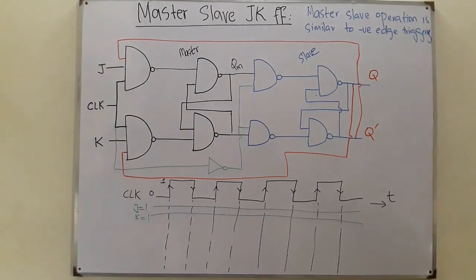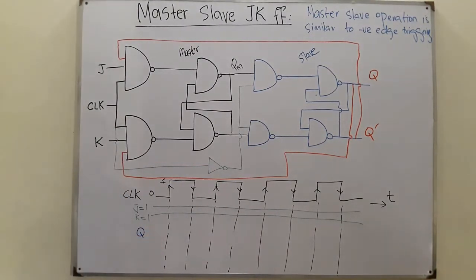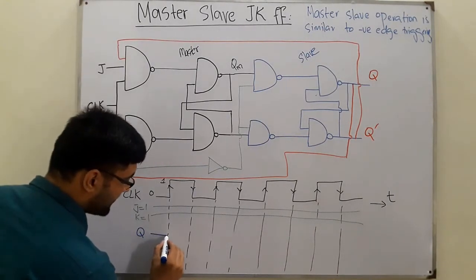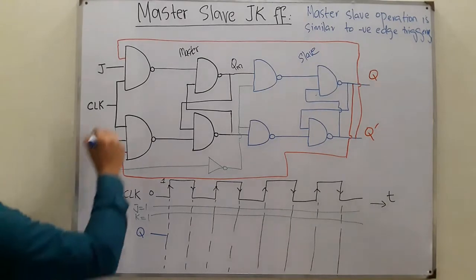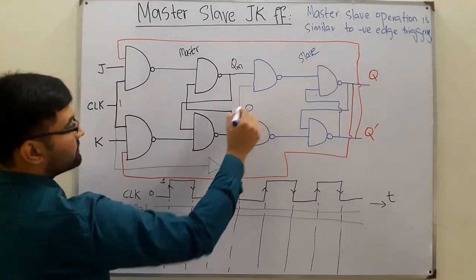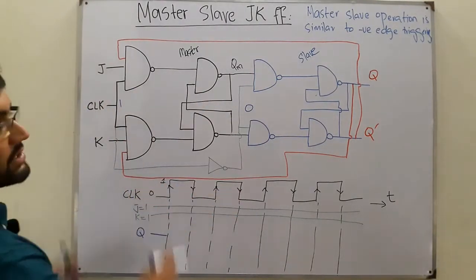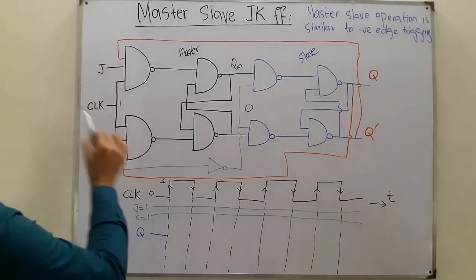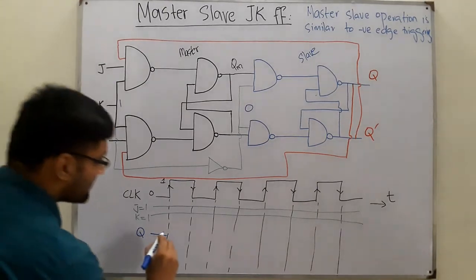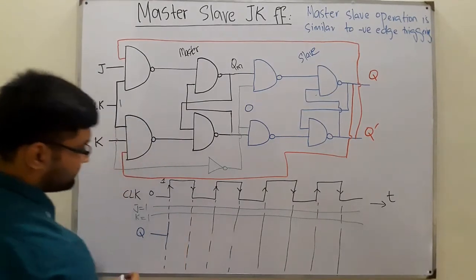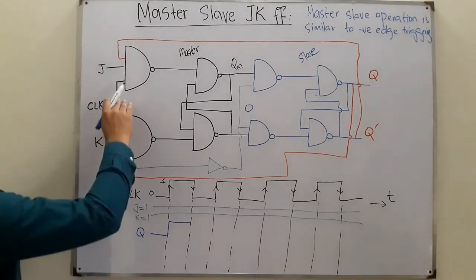We need to find QM and the final output Q using blue color. Initially the value is zero. When the clock is high — one over here and zero over there — that slave circuit is not operating. For the master circuit, when K=1, J=1, and the clock is one, it will toggle, meaning it changes from zero to one.